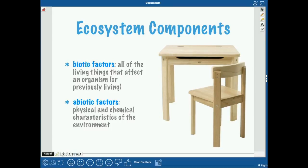Now for ecosystem components: we have biotic factors, which are living things that affect an organism, or something that was previously living. For example, a desk made out of wood — wood was previously living, so as long as it's real wood and not plastic, it would be considered biotic.